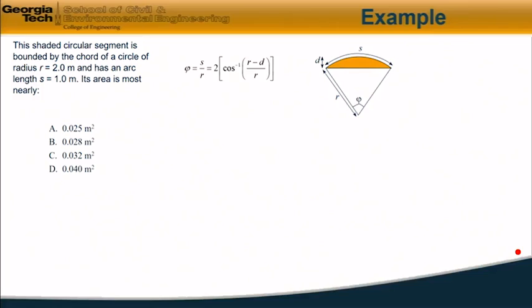Here is our definition sketch, similar to the one in the handbook. We have a radius r, a height of the segment d, an arc length s, and an interior angle phi. The equations are: phi, the interior angle, equals s over r, which is 2 cosine arc of (r minus d) over r. In this case, phi is s over r, s is 1 meter, r is 2 meters, so the angle phi is 0.5. Remember that when we calculate it like this, the units of the angle are in radians.